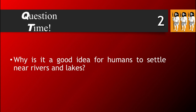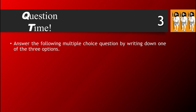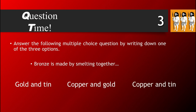Question 2: Why is it a good idea for humans to settle near rivers and lakes? Question 3: Answer the following multiple choice question by writing down one of the three options. Bronze is made by smelting together — is it gold and tin, copper and gold, or copper and tin? Put your answers below.